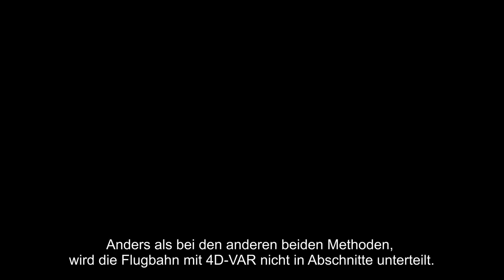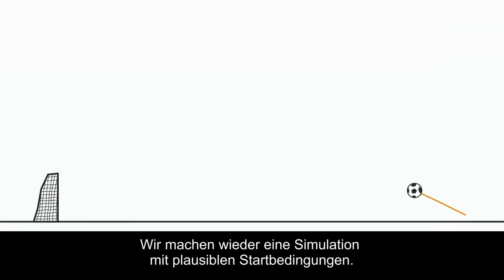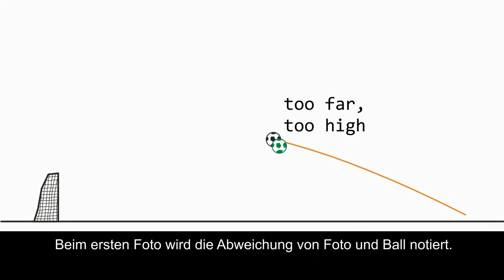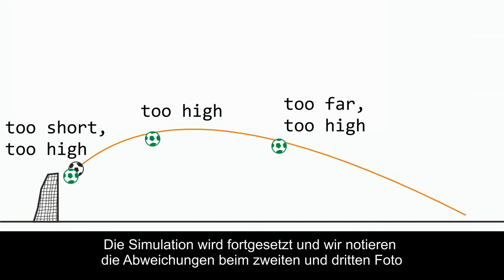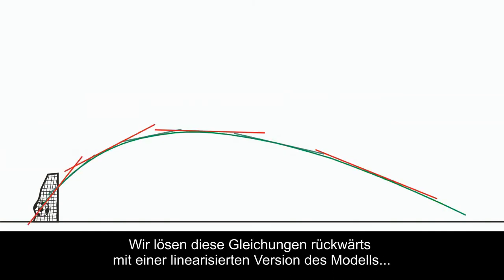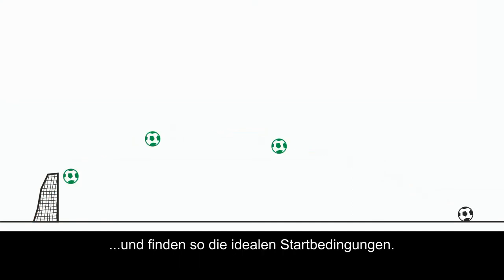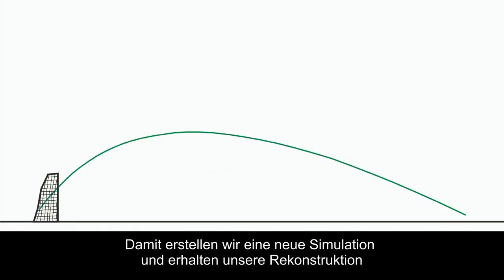Unlike the other two methods, the third approach, 4D Var, does not segment the trajectory. It tries to find the ideal starting conditions for one uninterrupted trajectory. We again begin with reasonable starting conditions, make a forecast and note the deviation at the first photograph. We do not, however, stop or adjust the simulation, but go on to the second and third photograph, each time noting the deviation between photograph and simulation. Each of these deviations gives us an equation. We solve these equations backwards using a linearized version of the model, which gives us the ideal starting positions. We now make a new forecast based on these starting positions, which then gives us our reconstruction.